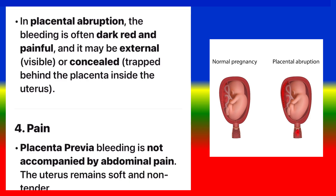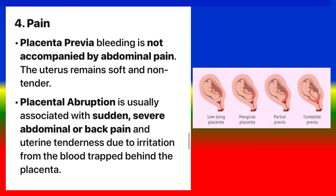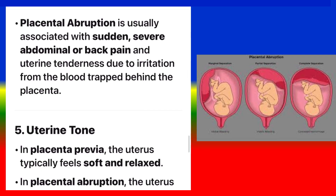Concealed bleeding in abruption means blood is trapped behind the placenta inside the uterus. Pain. Placenta previa bleeding is not accompanied by abdominal pain; the uterus remains soft and non-tender. Placental abruption is usually associated with sudden, severe abdominal or back pain and uterine tenderness due to irritation from the blood trapped behind the placenta.